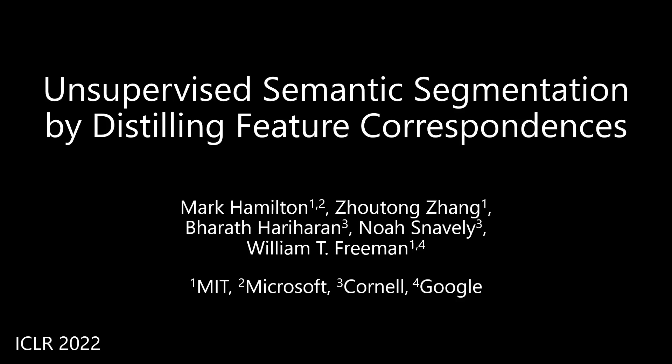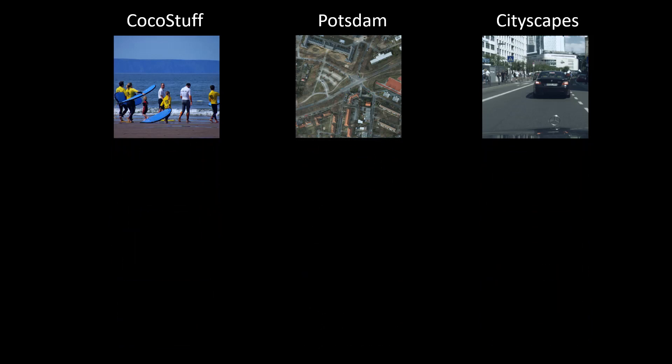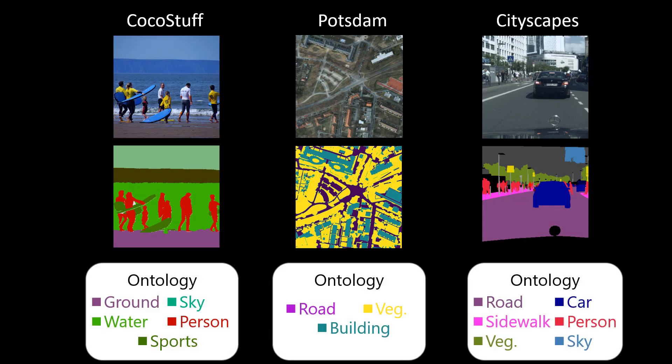Hi, my name is Mark Hamilton, and today I'll be sharing our work on unsupervised semantic segmentation by distilling feature correspondences. The aim of this work is to take a large and complex corpus of images and to classify every single pixel of these images into a consistent ontology of objects. The main catch is that, unlike prior work, we aim to do this entirely without labels.